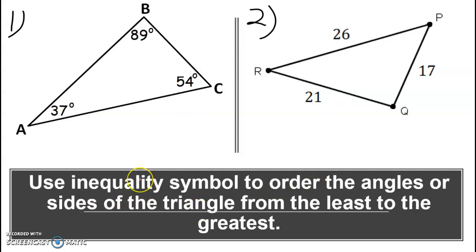They ask us to order it from least to greatest, from the smallest angle. Here we have angles 54, 89, 37. 37 is the smallest angle. If 37 is the smallest angle, we trace it, so side BC is going to be the smallest side. So we say BC is less than...